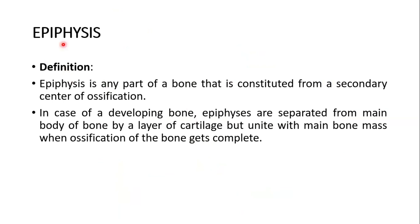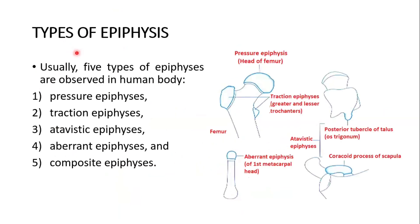What is the definition of an epiphysis? Epiphysis is any part of a bone that is constituted from a secondary center of ossification. In case of a developing bone, epiphyses are separated from the main body of the bone by a layer of cartilage, but unite with the main bone mass when ossification of the bone gets complete. There are five types: pressure epiphysis, traction epiphysis, atavistic epiphysis, aberrant epiphysis, and composite epiphysis.